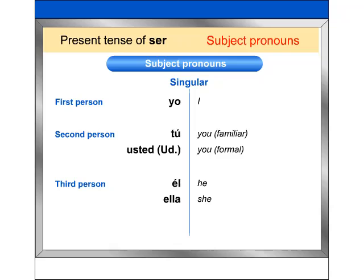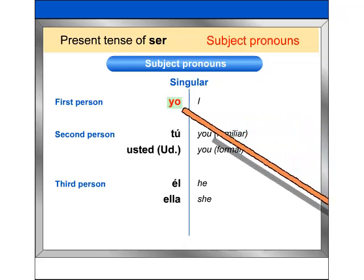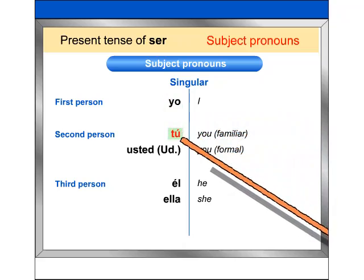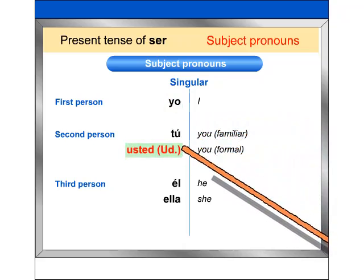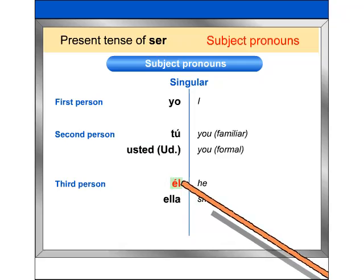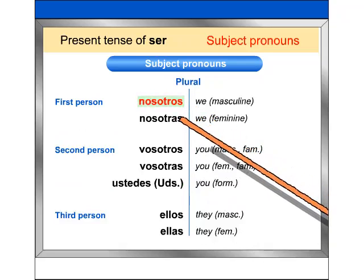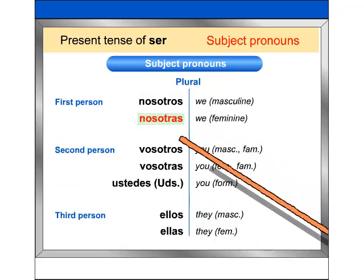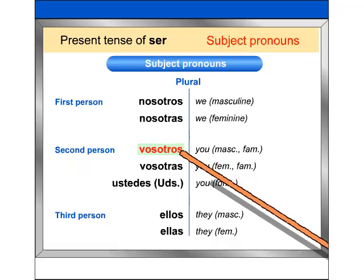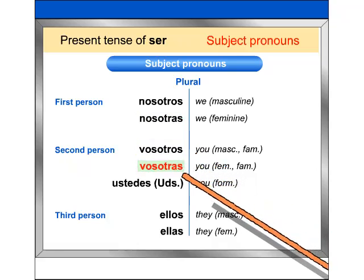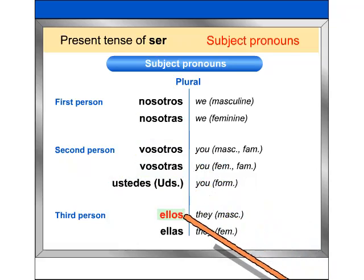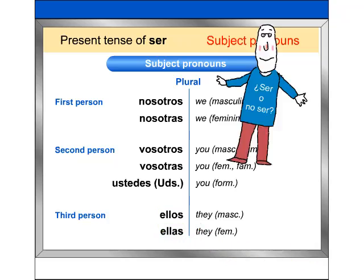Repeat after me to learn the pronunciation of the subject pronouns in Spanish: yo, tú, usted, él, ella, nosotros, nosotras, vosotros, vosotras, ustedes, ellos, ellas. Muy bien.